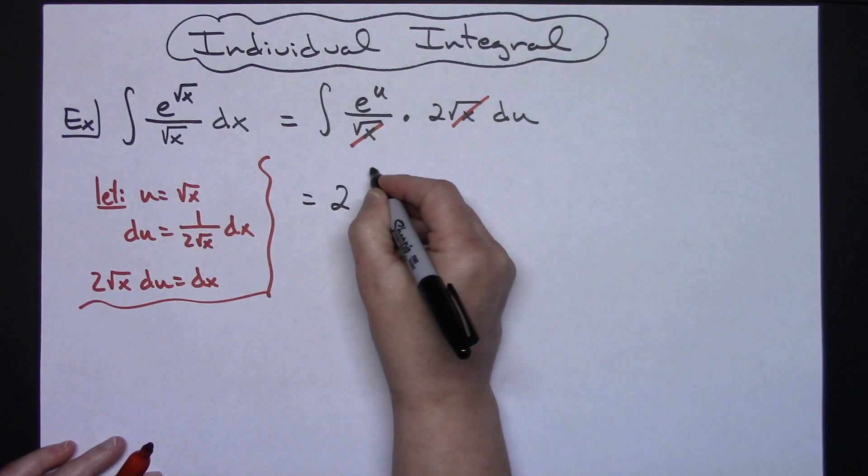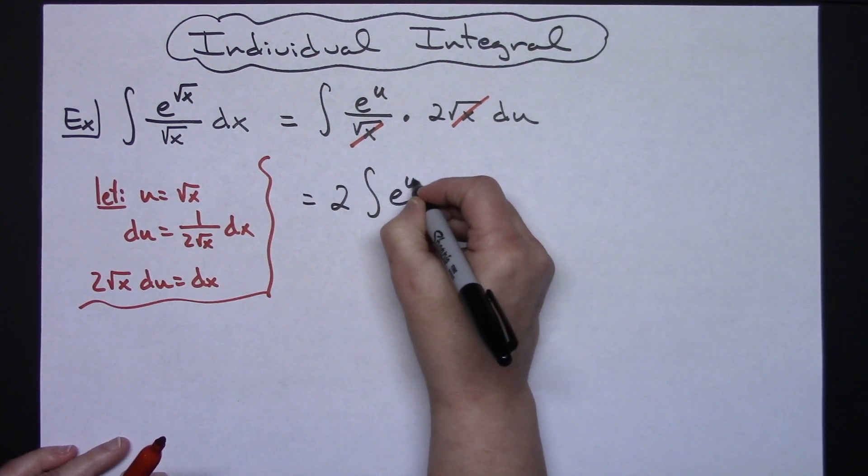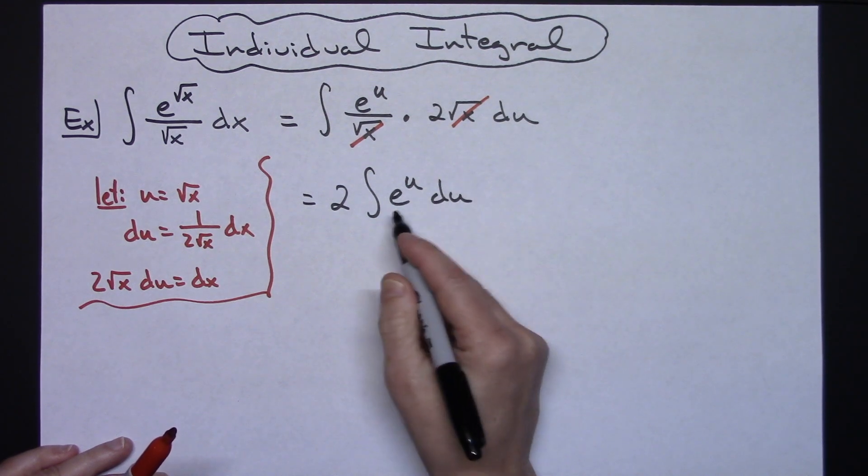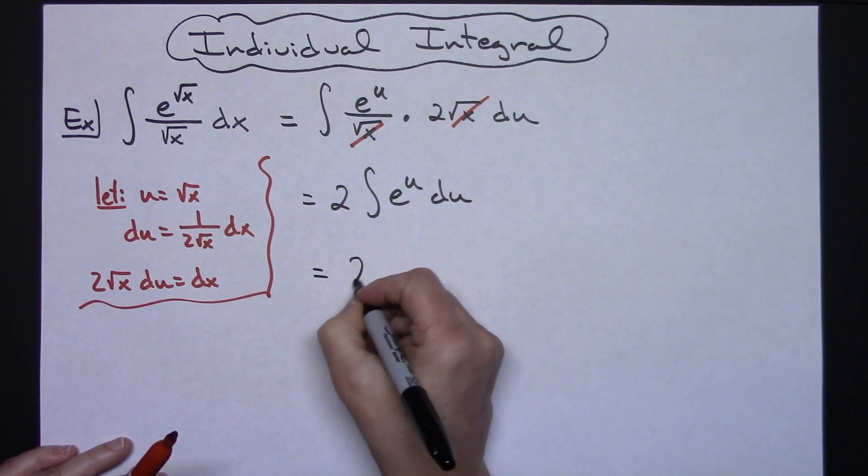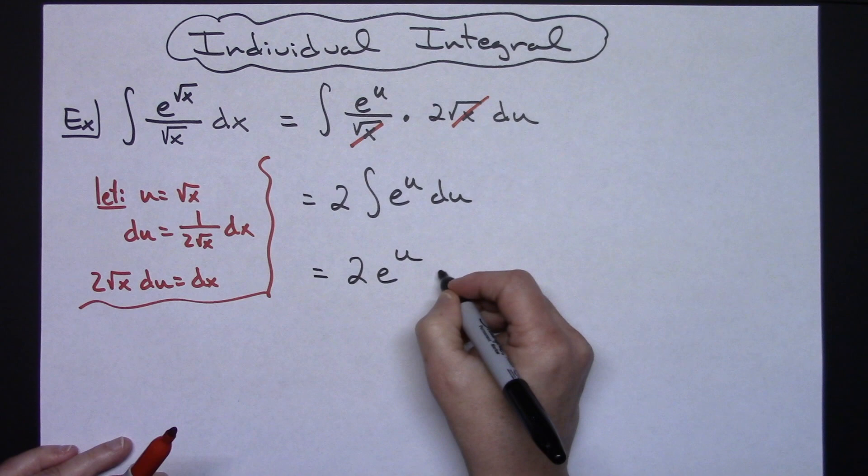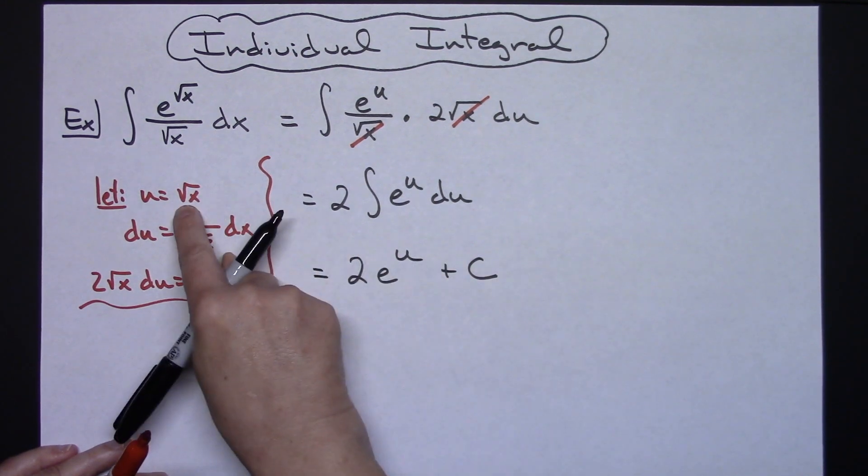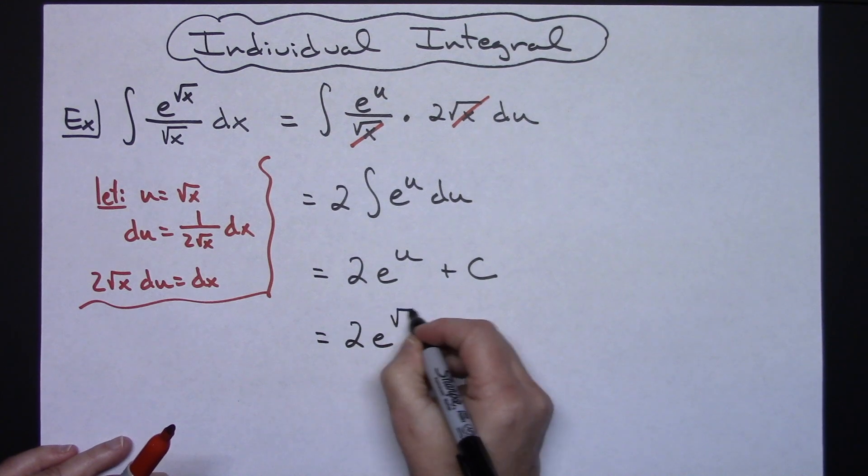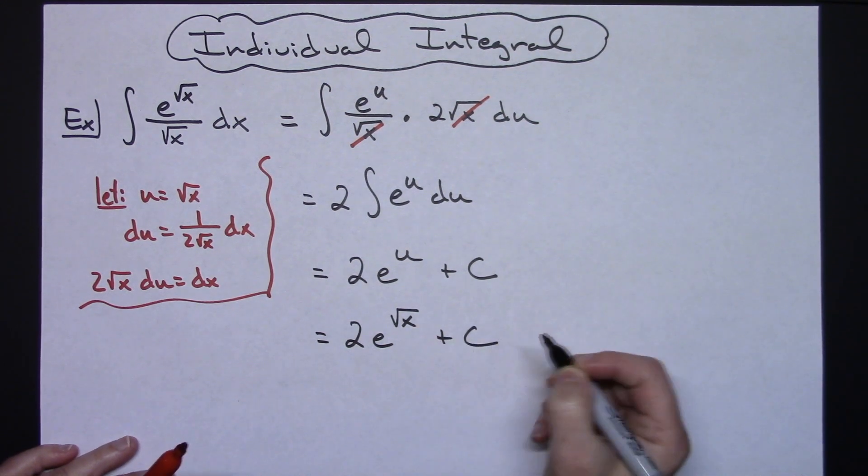I'll have 2 the integral of e to the u du and then e to the u integrates to e to the u, so then I'm going to have a 2 e to the u plus c. Replacing u with what it is, I'll have a 2 e to the square root of x plus c.